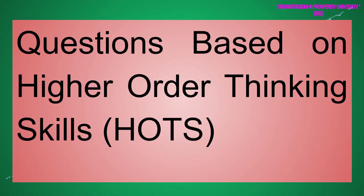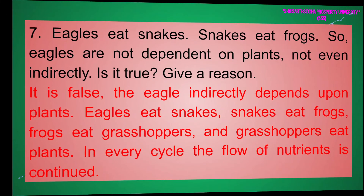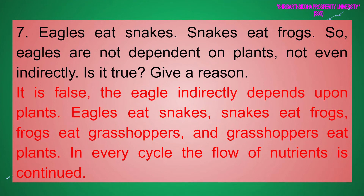Seven: Higher Order Thinking Skills (HOTS). Eagles eat snakes, snakes eat frogs — so eagles are not dependent on plants, not even indirectly. Is this true? Give a reason. Answer: It is false. The eagle indirectly depends upon plants. Eagles eat snakes, snakes eat frogs, frogs eat grasshoppers, and grasshoppers eat plants. In every cycle, the flow of nutrients is continued.